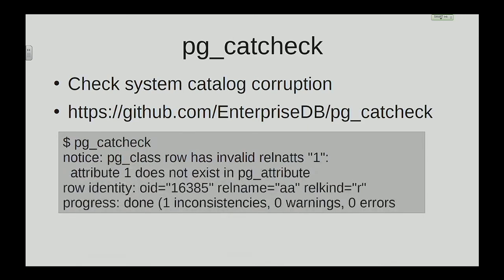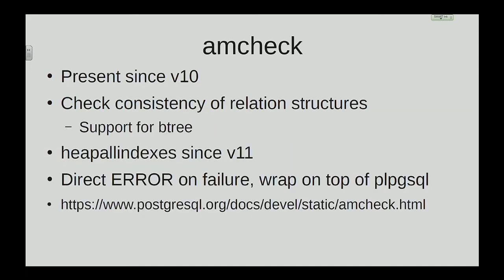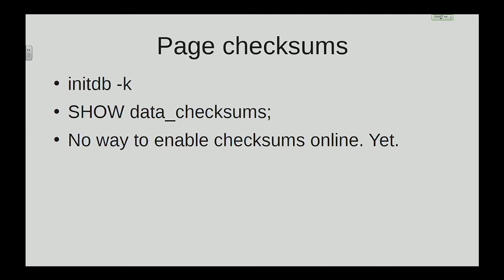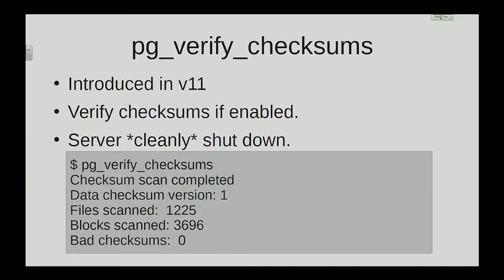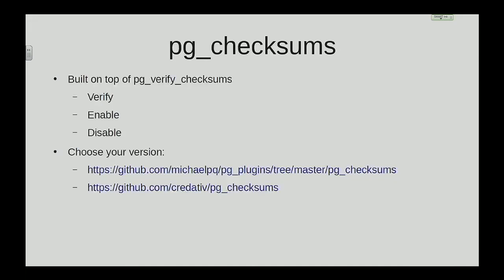One of them is pg_catcheck, which checks for consistency in system catalogs. For example, imagine you're missing an attribute — emulate that by doing a manual delete on pg_attribute and you would see it. You have amcheck, which can do a bunch of checks. You have page checksums, and we have new tools like pg_verify_checksums, which checks a stopped cluster to ensure checksums are in a clean state. There's also pg_checksums, which can be used to enable, disable, or verify checksums.